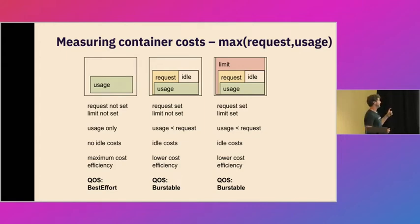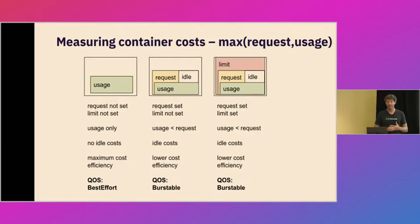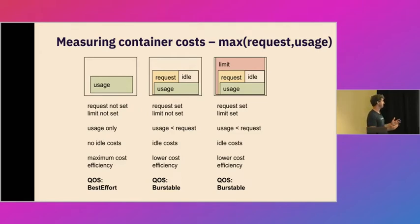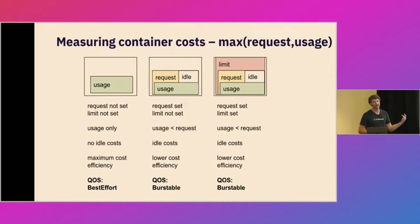If a pod is best efforts and does not have a Kubernetes request applied — meaning it doesn't have resources allocated for it by the scheduler — costs are based on just usage only. You pay for what you use, and if you don't use anything, you don't incur any costs. This is great from an efficiency standpoint in the sense that there are no idle costs associated with this workload. But it comes at the tradeoff that this best effort pod is generally going to be the first to be CPU throttled, and generally the first to be OOM evicted if there is a shortage of memory available. It's actually really good from a cost efficiency standpoint, but there's a real tradeoff in terms of quality of service or reliability.